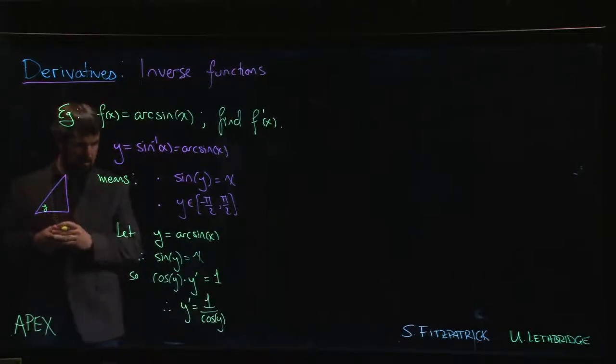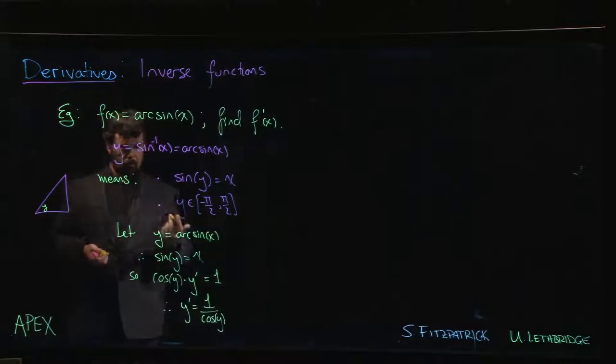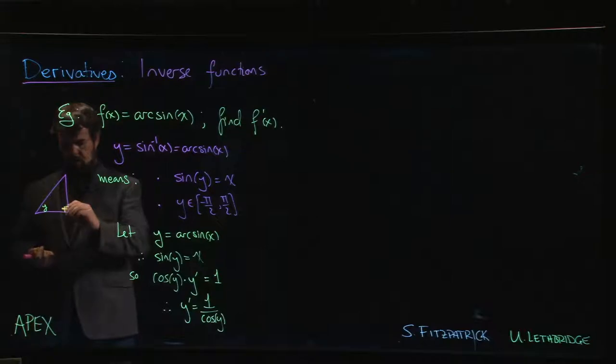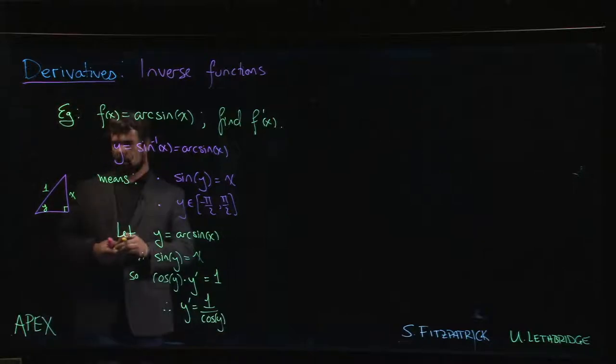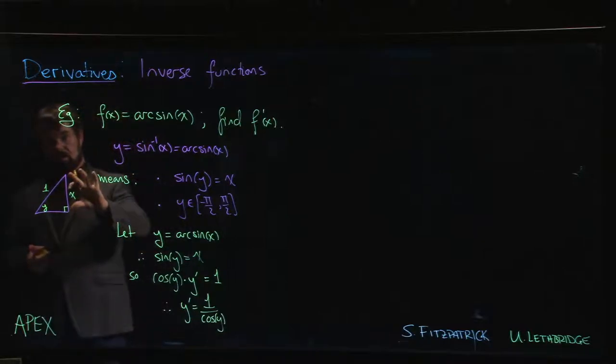Now how do we define sine of an angle in triangle trig? For a right triangle, trig is opposite over hypotenuse. So think of x as x over one. So if I draw a triangle with this side length equal to x and hypotenuse one, sine of y will be x over one, it'll be x.